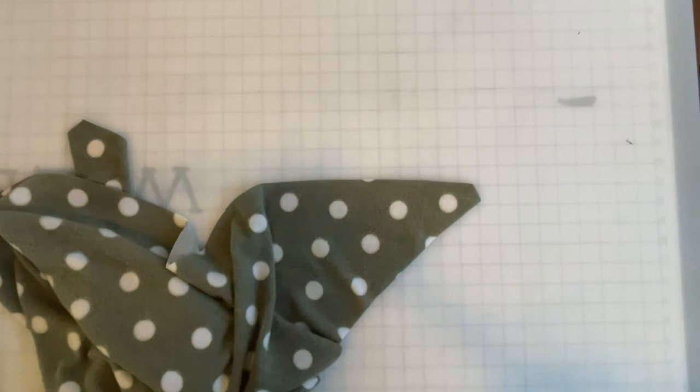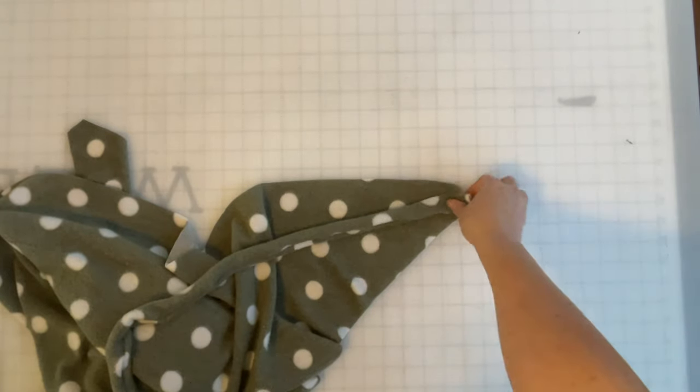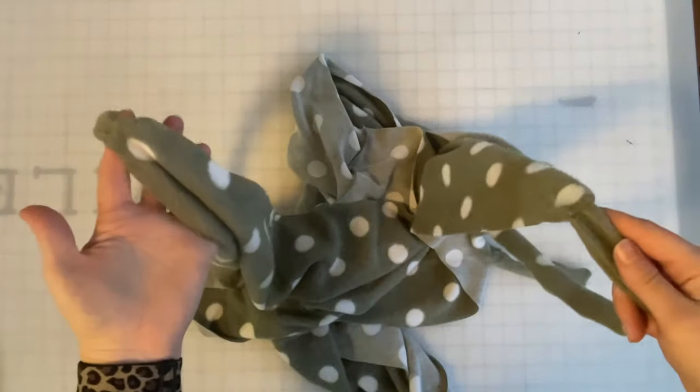We're going to take our strap pieces, just one strap piece, align it here, and we're going to stitch along the edge. We're going to do that on the other side as well. We've got our straps attached on either side.